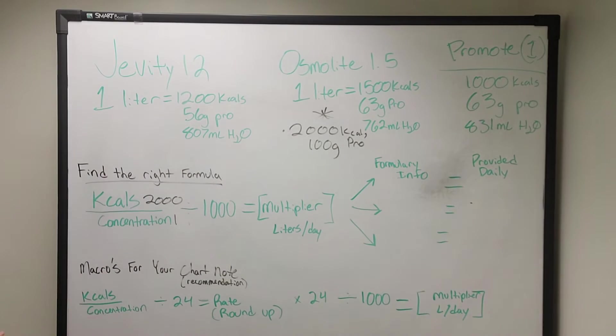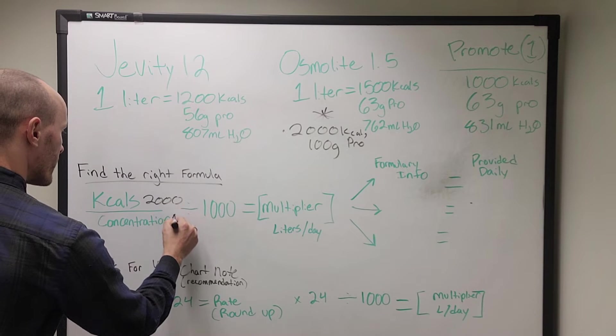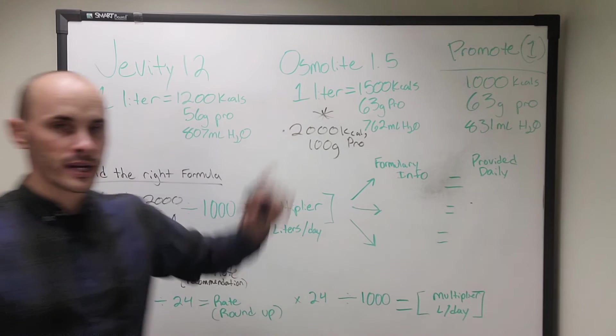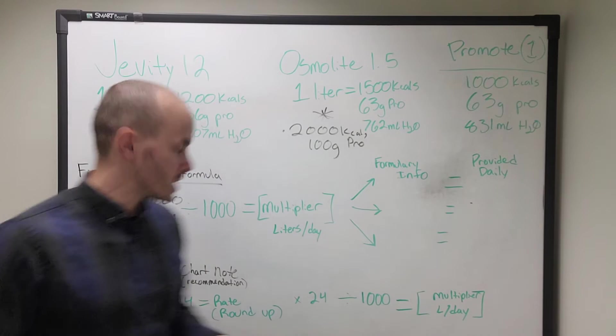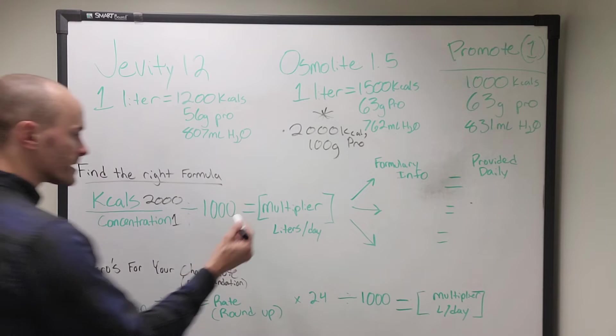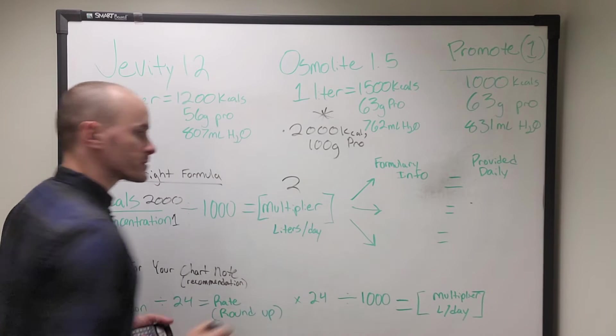So here kcals. Their kcals haven't changed. It's 2,000. We're going to divide by the concentration of promote. Now promote is a 1-cal formula. We're going to divide by 1,000. That's going to give us a multiplier of 2.